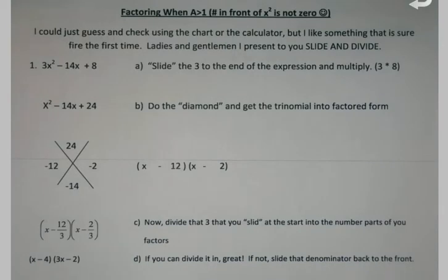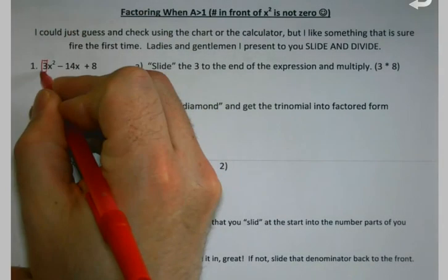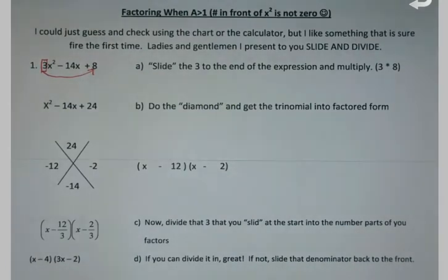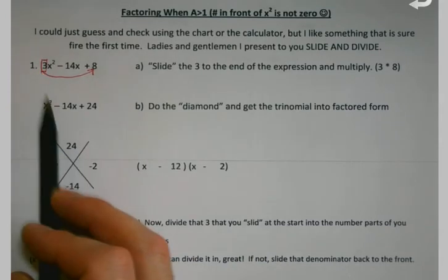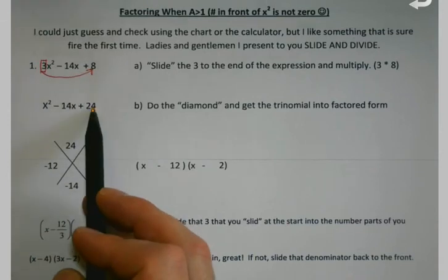The diamond itself won't work on this. If you have a number in front, we're going to take that and slide it to the end of the expression and multiply it. So 3x² - 14x + 8 becomes x² - 14x + 24, where I moved the 3 down and multiplied 3 times 8.